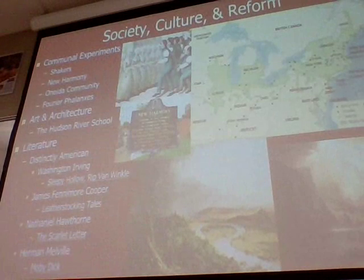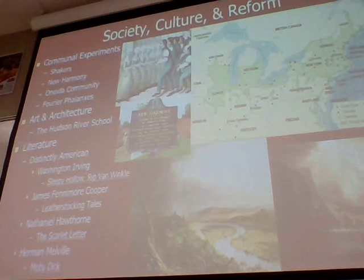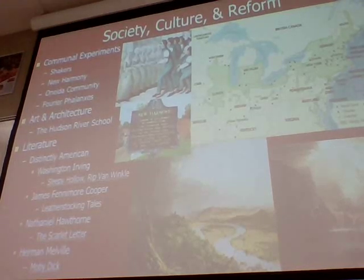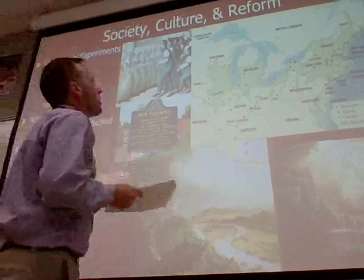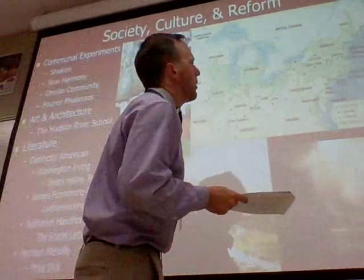Next is the Oneida Community in New York — another religious-based one, developed by a man named John Humphrey Noyes in 1848. It was dedicated to the idea of a perfect society and economic equality.